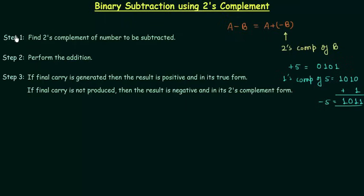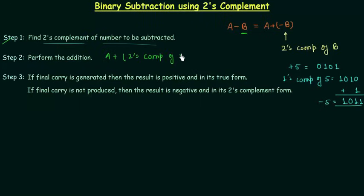Now we will move to step number one. In step number one, we have to find the two's complement of the number to be subtracted. The number to be subtracted is B, so find the two's complement of B. In step number two, perform the addition — perform A plus the two's complement of B. Whatever the result of the two's complement of B added to A is, that is what we have to do in step number two.